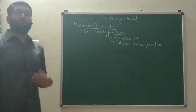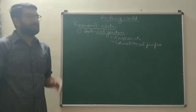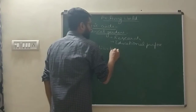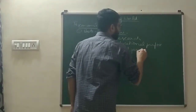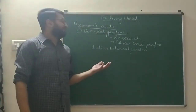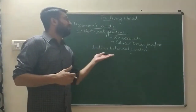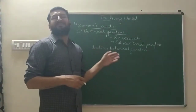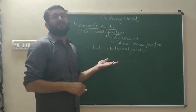Botanical gardens are called research and educational institutions. The first botanical garden in India is the Indian Botanical Garden in Havada, which is now in Kolkata. Initially it was referred to as the National Botanical Garden. Now this garden is referred to as Acharya Subhash Chandra Bose Botanical Garden.